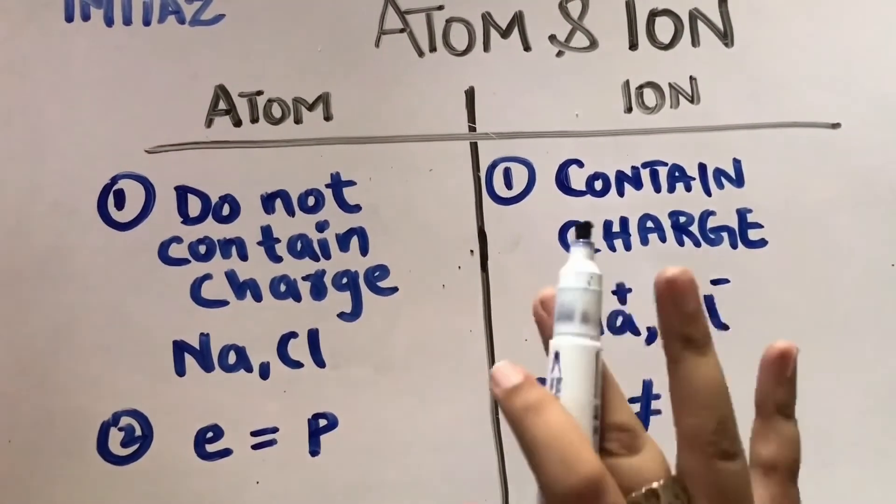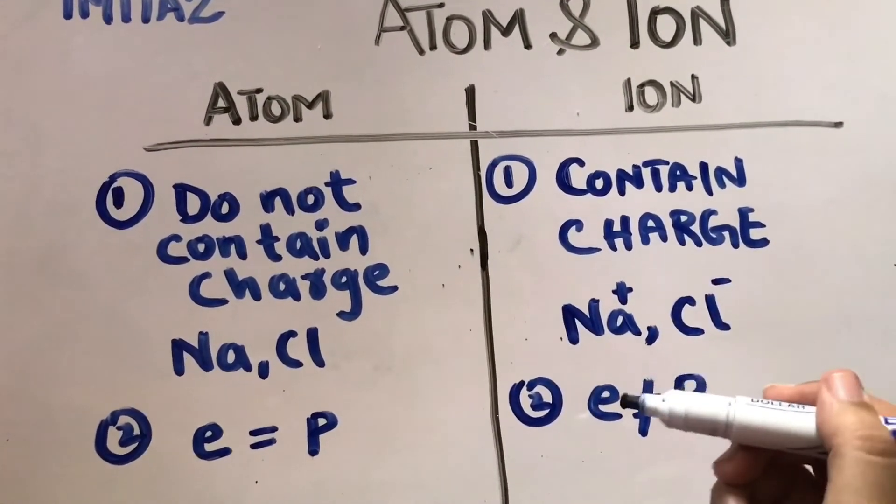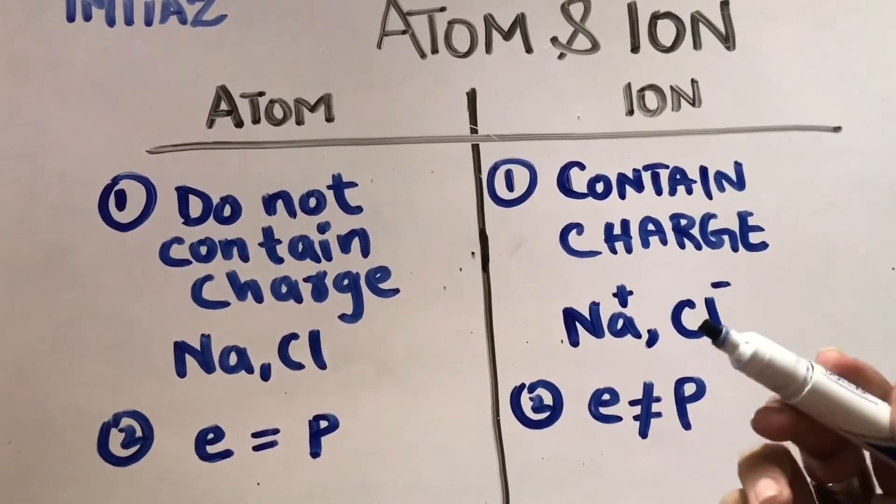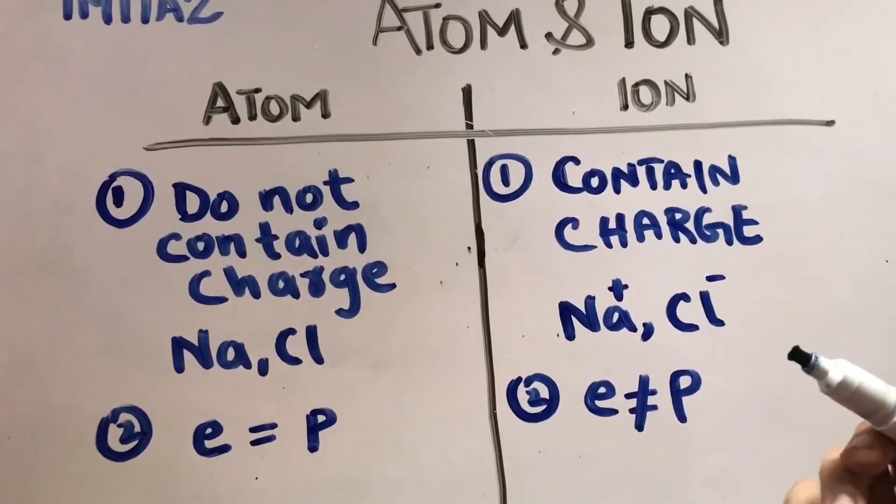In this loss and gain, of course, electron numbers come up and down, sometimes minus and sometimes plus. In this addition and subtraction, electron numbers are always disturbed. That is why we say electron is not equal to proton number.